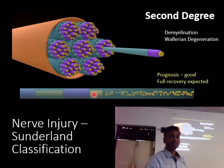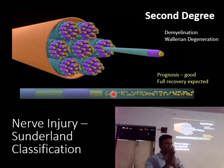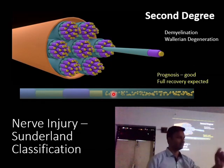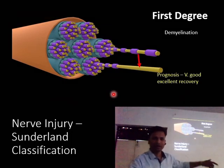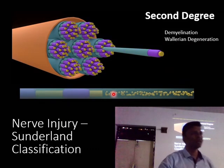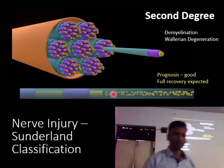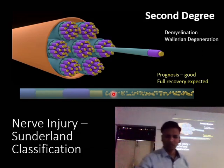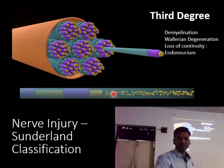One important point: after Wallerian degeneration, the residue is removed and nerve regeneration occurs at a maximum rate of one millimeter per day. To recap — first degree has demyelination, second degree has demyelination plus Wallerian degeneration; both have intact endoneurium so full recovery is expected — one to three months and three to six months respectively.